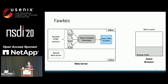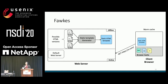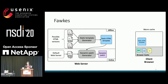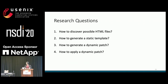The warm cache case follows a similar pattern, but the browser starts with the static template already in its cache along with other cacheable resources like images and CSS. When the user requests a page, the browser immediately sends an asynchronous request for the most updated dynamic patch while parsing the static template. Patch generation on the server works the same way, and as soon as the patch is generated it is sent back to the client.